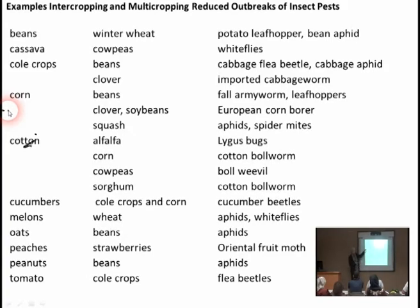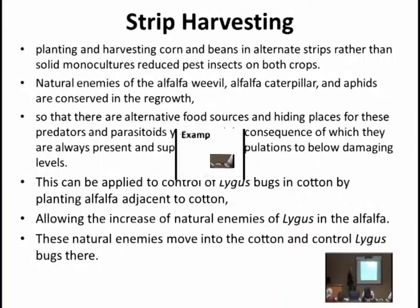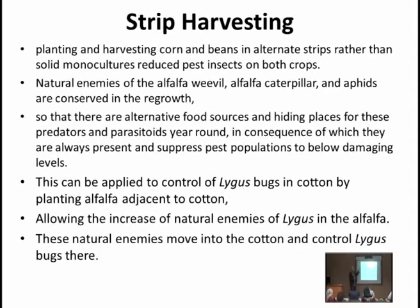Another way of ecological control is strip harvesting. Strip harvesting means planting and harvesting corn and beans in alternative strips rather than solid monoculture, which reduces pest insects in both crops. عند عمل الزراعات المختلطة بين الذرة والفاصولياء وزراعتهم صفاً صفاً وحصاد stripe واحدة وترك الأخرى.